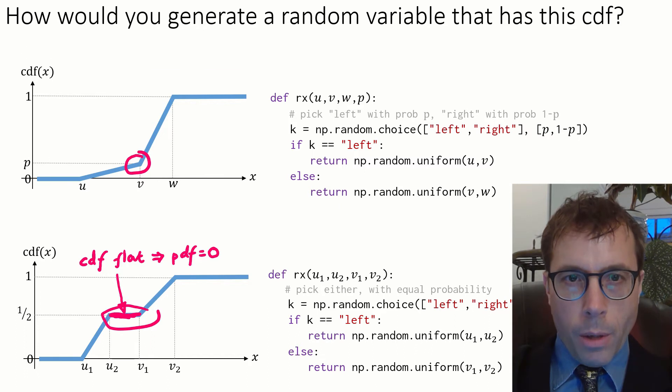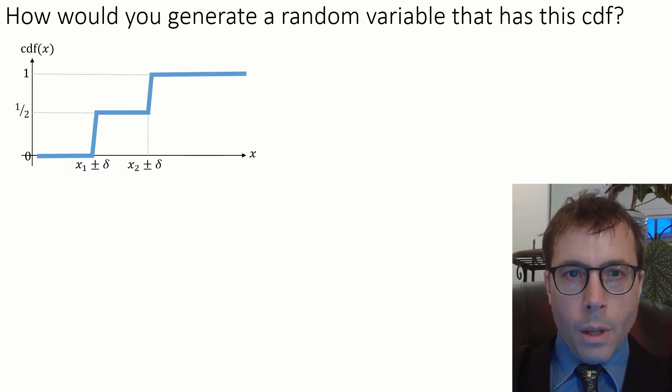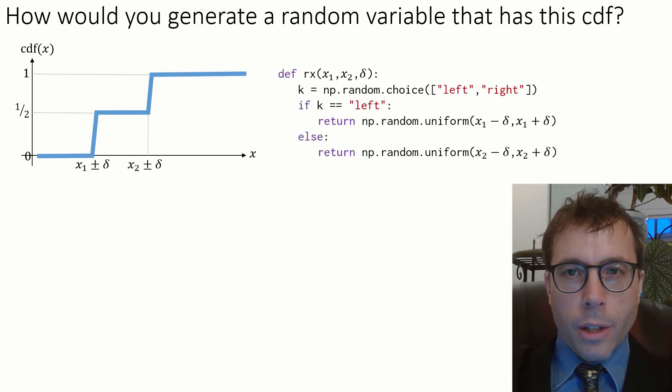Okay, here's another one. This one's exactly the same as before, just with different variable names. Here, the two uniforms are very narrow. There's a uniform of x1 minus delta to x1 plus delta, and another one for a small band around x2, but exactly the same code as before.